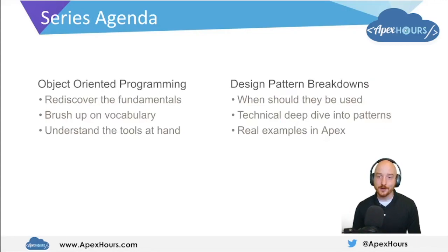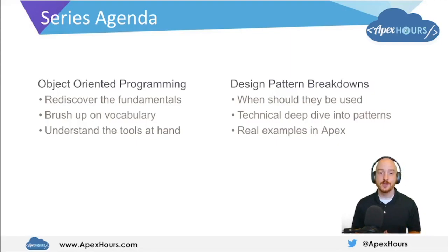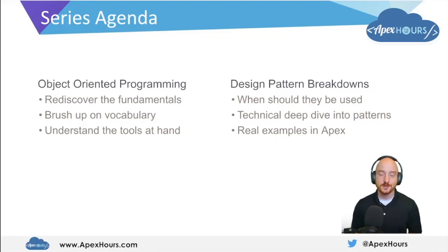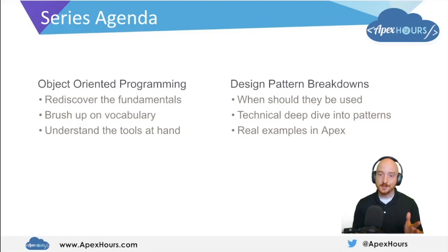For this series, what are we going to be focusing on? We're going to be focusing on object oriented design patterns. We'll start off with some foundational topics about object oriented programming, rediscover the fundamentals, and make sure we're all on the same page as far as vocabulary goes. Then we'll explain the tools we have within our tool belt to help us create really elegant solutions. Once we're done with the object oriented programming basics, we'll take a look at individual design patterns — when they should be used, what problems they solve, and we'll give a deep dive into each one's technical implementation with real world examples you can use within your Apex code today.